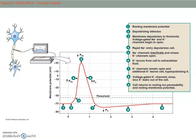We have a membrane at rest at minus 70 millivolts — that's our resting membrane potential, number one. Something happens that brings this membrane closer to threshold. Threshold is considered about minus 55 millivolts. Some event occurred that caused the membrane potential to get less negative, crossing threshold. At threshold, voltage-gated sodium channels open up. The majority of sodium is on the outside of the cell, so opening sodium ion channels causes sodium to flow down its concentration gradient into the cell, increasing the membrane's permeability to sodium.